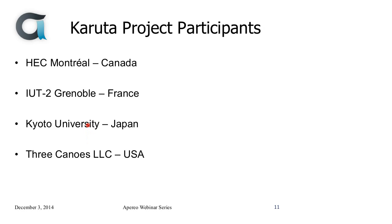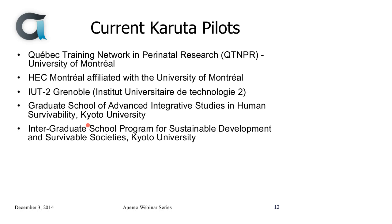We have four partners: HAC Montréal from Canada, IUT2 Grenoble, France, Kyoto University has two graduate programs participating in Japan, and Three Canoes LLC, a small consulting company out of the USA. We have five projects in process — two in Quebec, one in France, and two at Kyoto University in Japan.